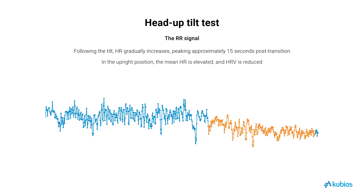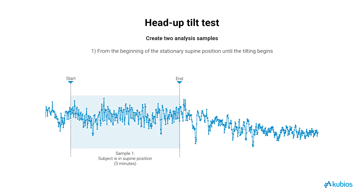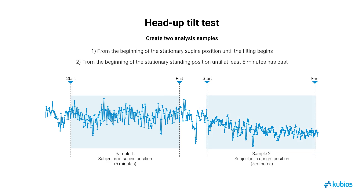In the upright position, the mean heart rate is elevated and HRV is reduced, particularly in indices sensitive to parasympathetic activity, compared to the supine position. You need to create two analysis samples in QBOs for this test: one for the supine position and one for the upright position, leaving the transition between the positions unmarked.